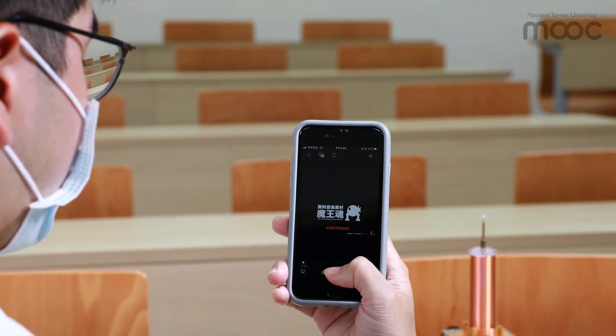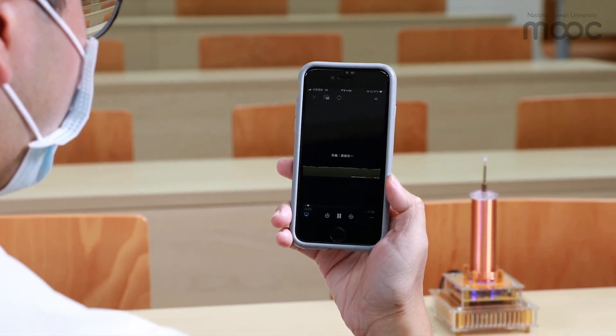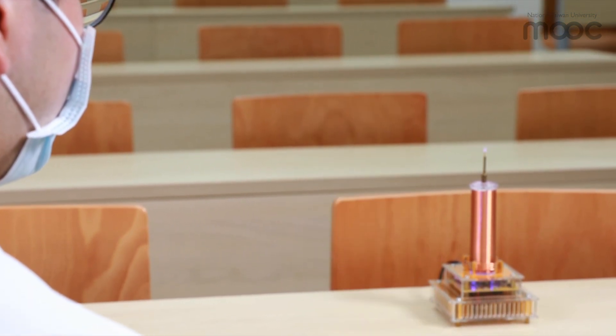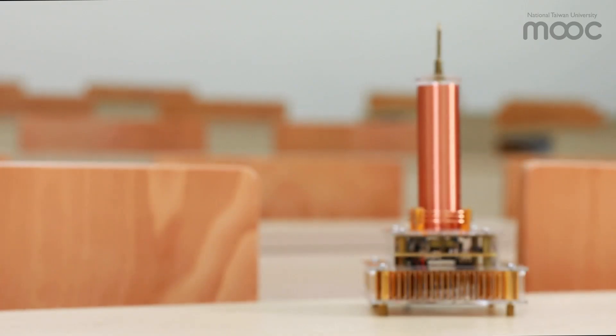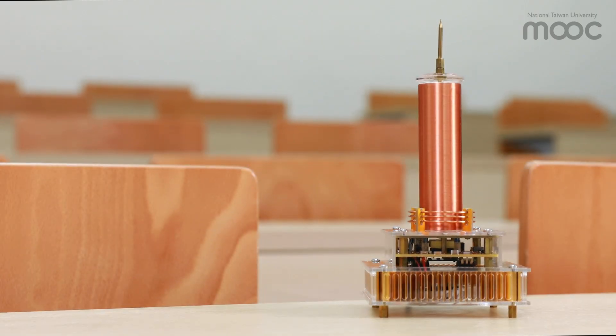Next, we send music signals to the Tesla coil via the built-in Bluetooth module. The Bluetooth module receives the music signal and modulates the radio waves at audible frequencies.